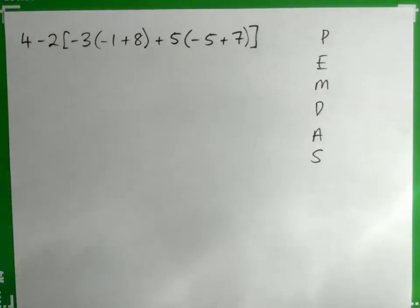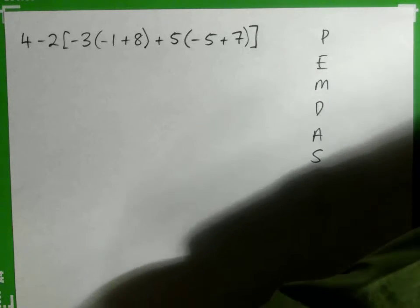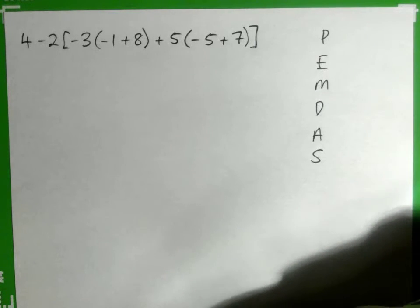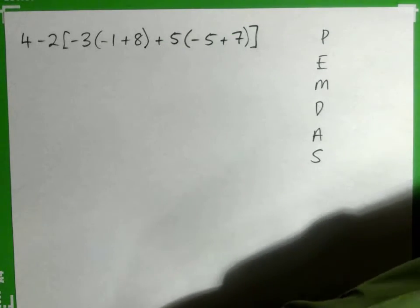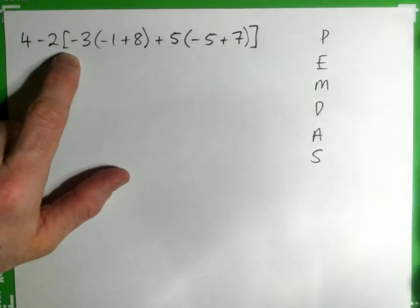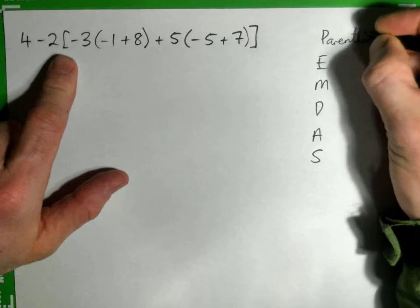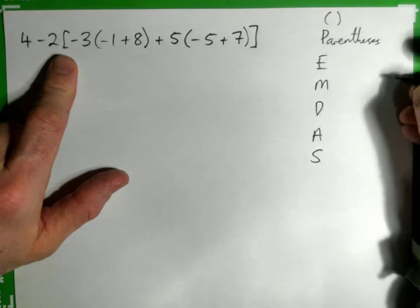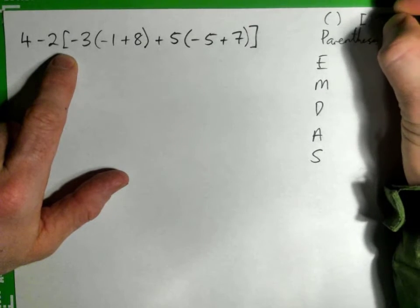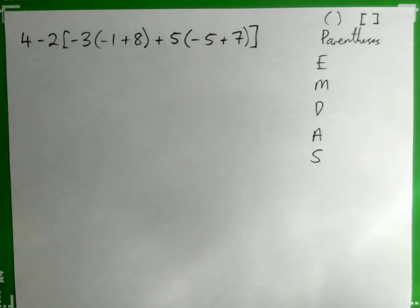So we need to think about the order of operations, and we think about parentheses, and how that square bracket is just another type of parentheses. So when we're talking about parentheses, they can look like this with the curves, or they can look like that with the square bracket. They're just different types of parentheses, so you treat them the same way.